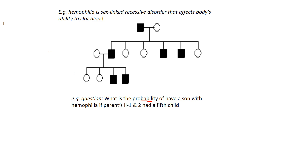Let's isolate the ones they're talking about: Generation 2, individuals 1 and 2 — these two individuals here. We already determined from the previous question that she is a carrier.